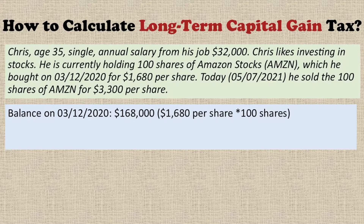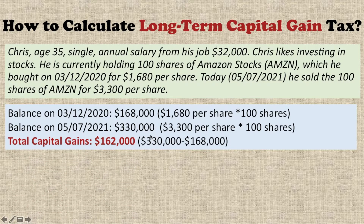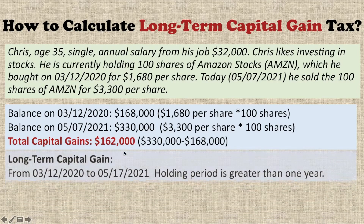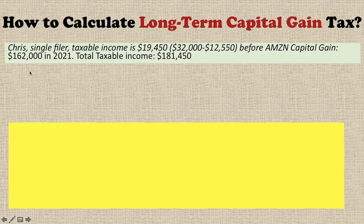So given this information, the balance of his Amazon stock on March 12, 2020 was $168,000. The balance on May 7th, 2021 is $330,000. The total capital gain is $162,000. This is a long-term capital gain because the holding period is greater than one year.